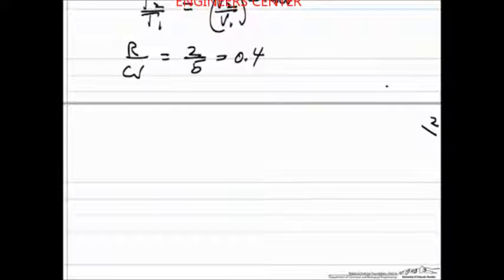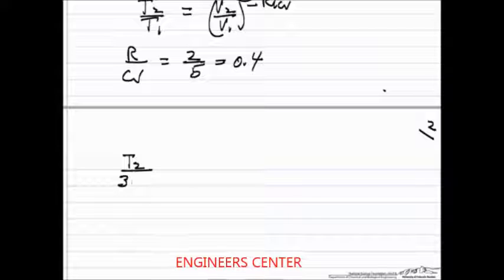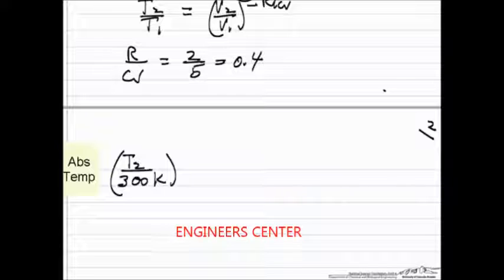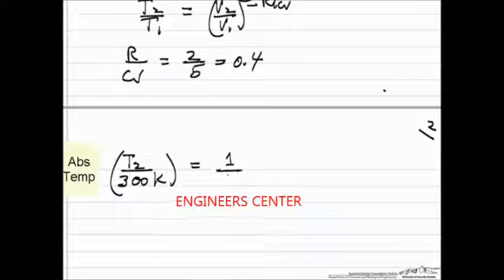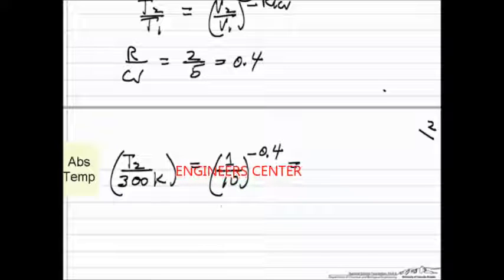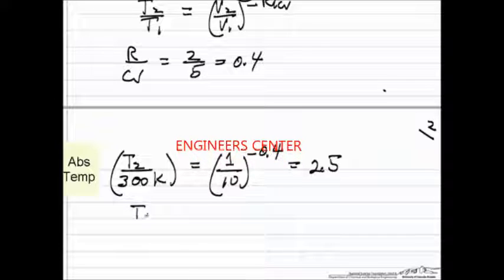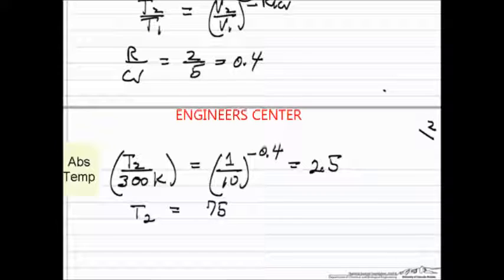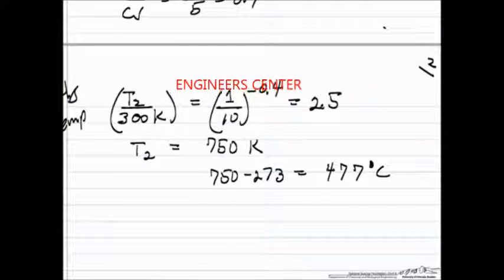So we can substitute in now the values. We have the final temperature which we don't know, initial temperature 300 kelvin, so we have to use absolute temperature in this calculation. The final volume is 1, initial volume was 10, and minus 0.4. If we plug this into a calculator, it's 2.5. So this says our final temperature is 2.5 times 300, so the final temperature is 750 kelvin, or if we do this in centigrade, it's 477°C.